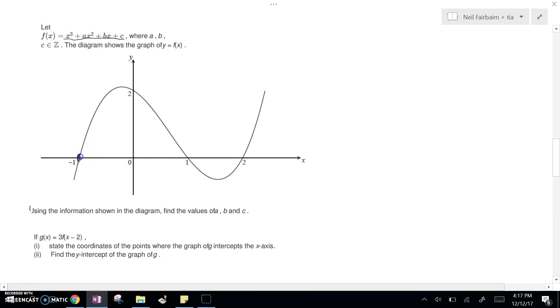Well, our fundamental theorem of algebra says that if you have a cubic, there's going to be three zeros. And right here you can see that the three zeros are negative one, one, and two.